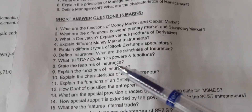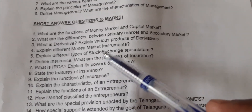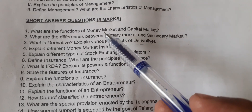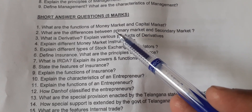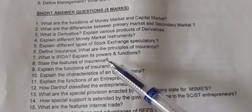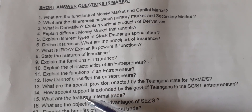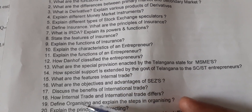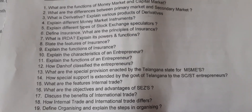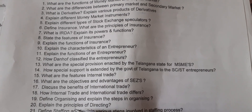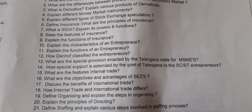Now we have SAQs — how many SAQs are there? 22 SAQs are given. Each one carries five marks — five-mark questions. 22 are given here. Please make a note: 22 SAQs are given.